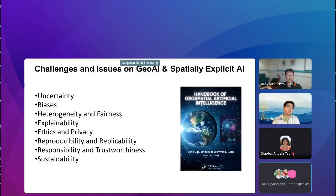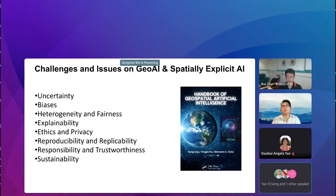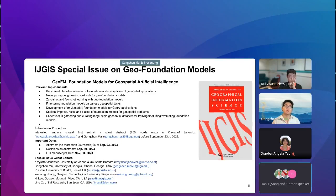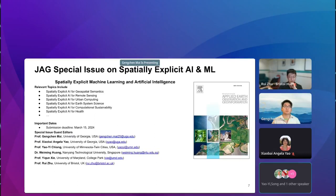We also noticed some challenges and issues, including incentives, bias, explainability, ethics and privacy, reproducibility, responsibility, and sustainability. That's why we have two special issues relating to this topic. The first is in the International Journal of Geographical Information Science about geospatial foundation models, and the second is directly on the topic of spatially explicit artificial intelligence and machine learning.